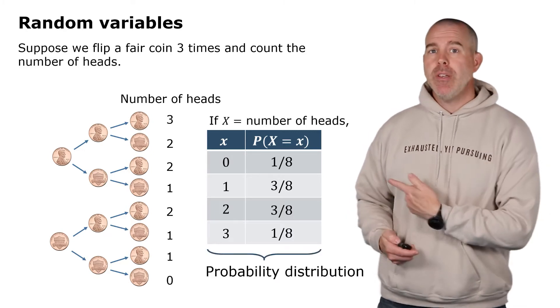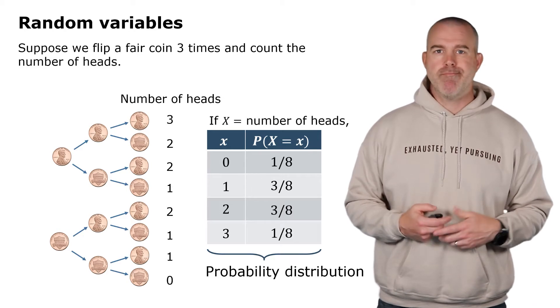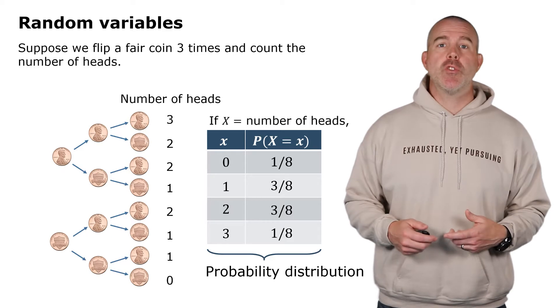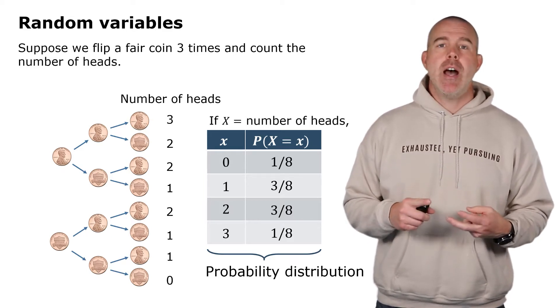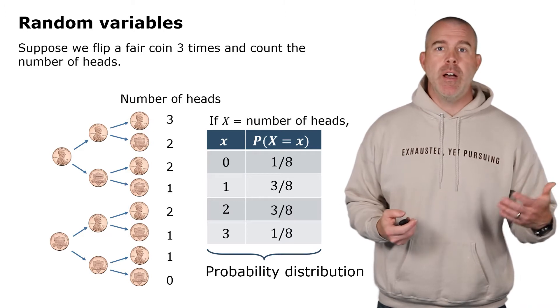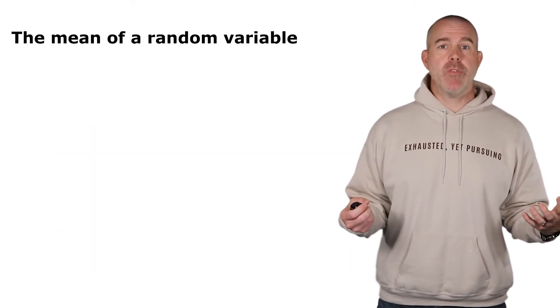The probabilities that we have here in the table, those are called the probability distribution—how the probability is distributed. There are different ways to get a probability distribution. We can get a table, we can give a graph, and then most common is we'll have some kind of formula to compute those probabilities. All right, that's the definition of a random variable. The next thing we want to talk about, it's really important, is how to compute the mean of a random variable. Sounds kind of boring, but it has some really interesting applications.